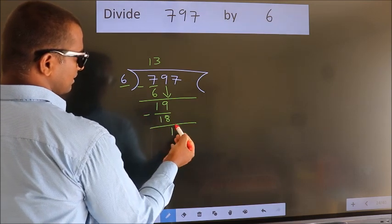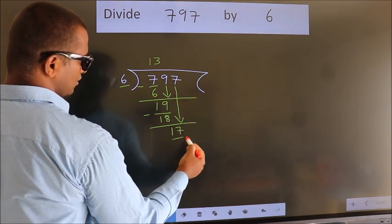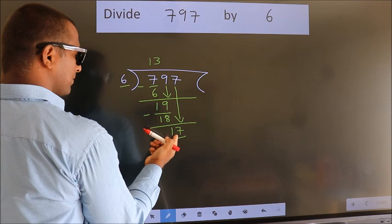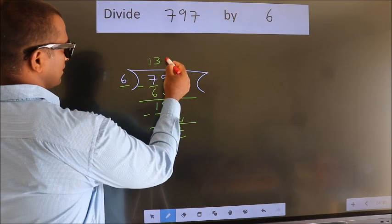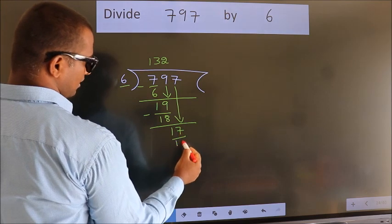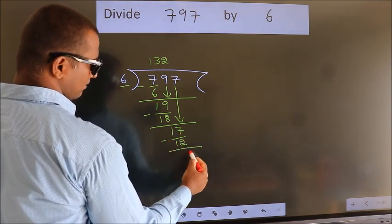After this, bring down the beside number. So 7 down. So 17. A number close to 17 in 6 table is 6 twos, 12. Now we subtract. We get 5.